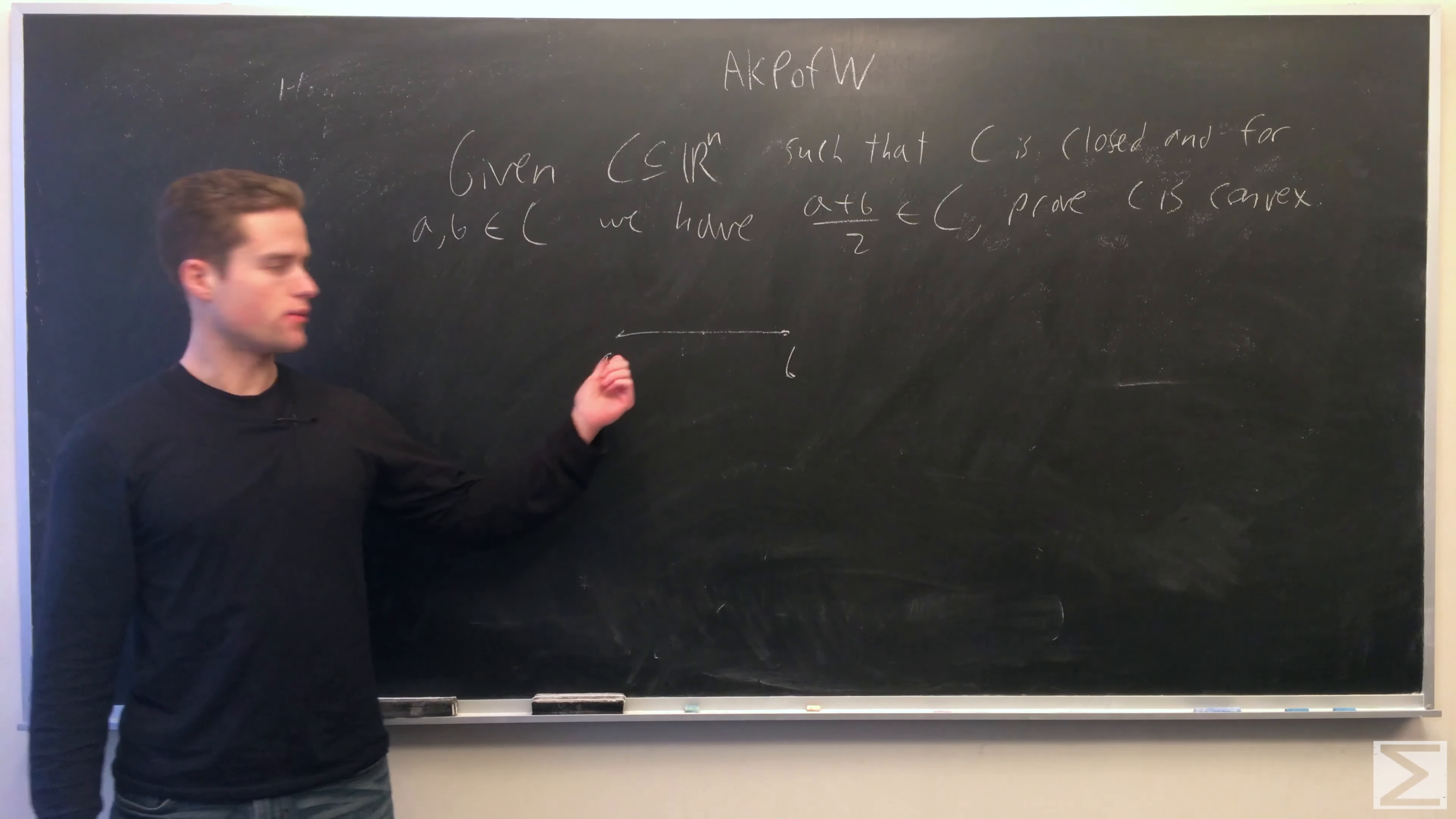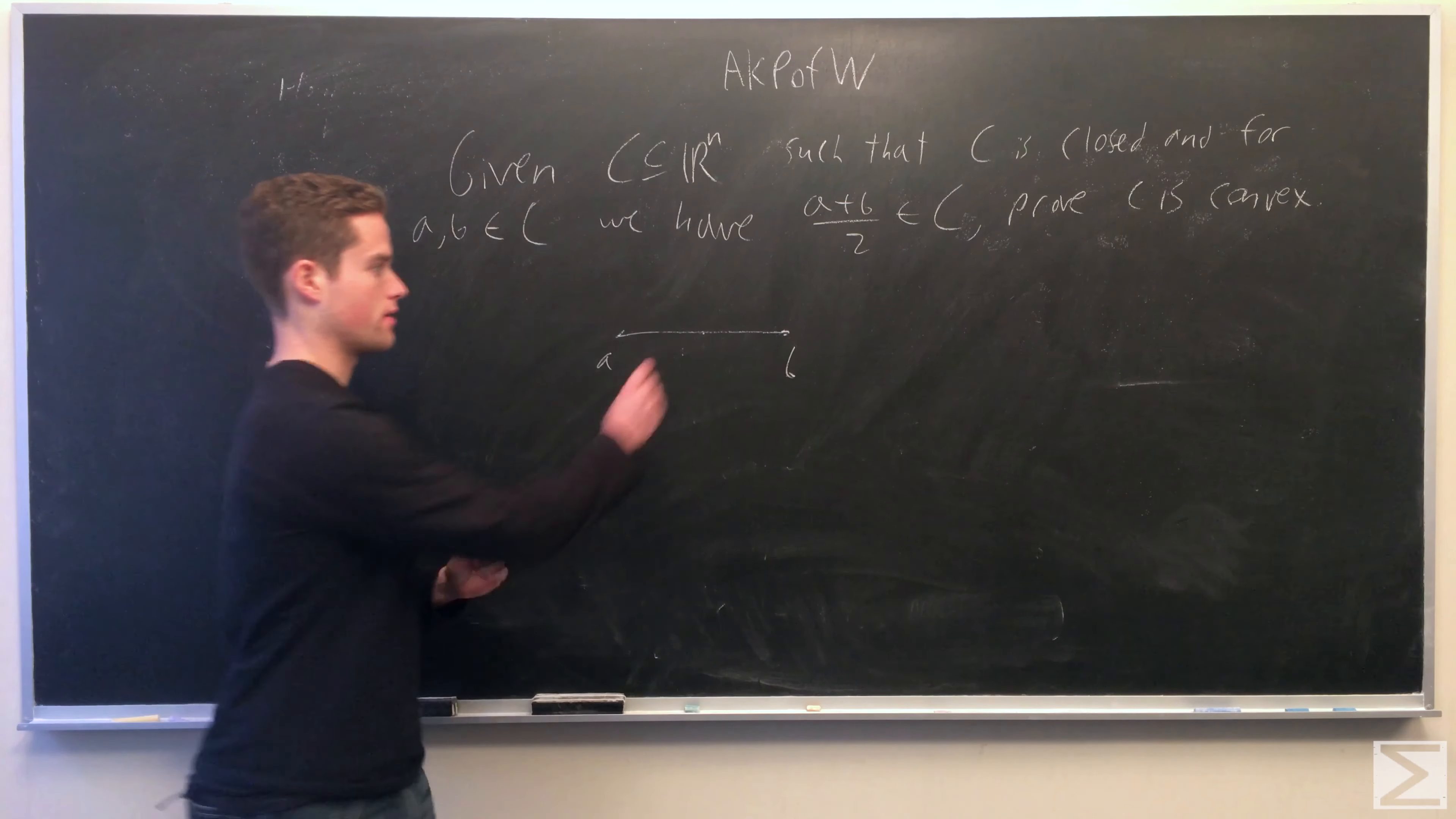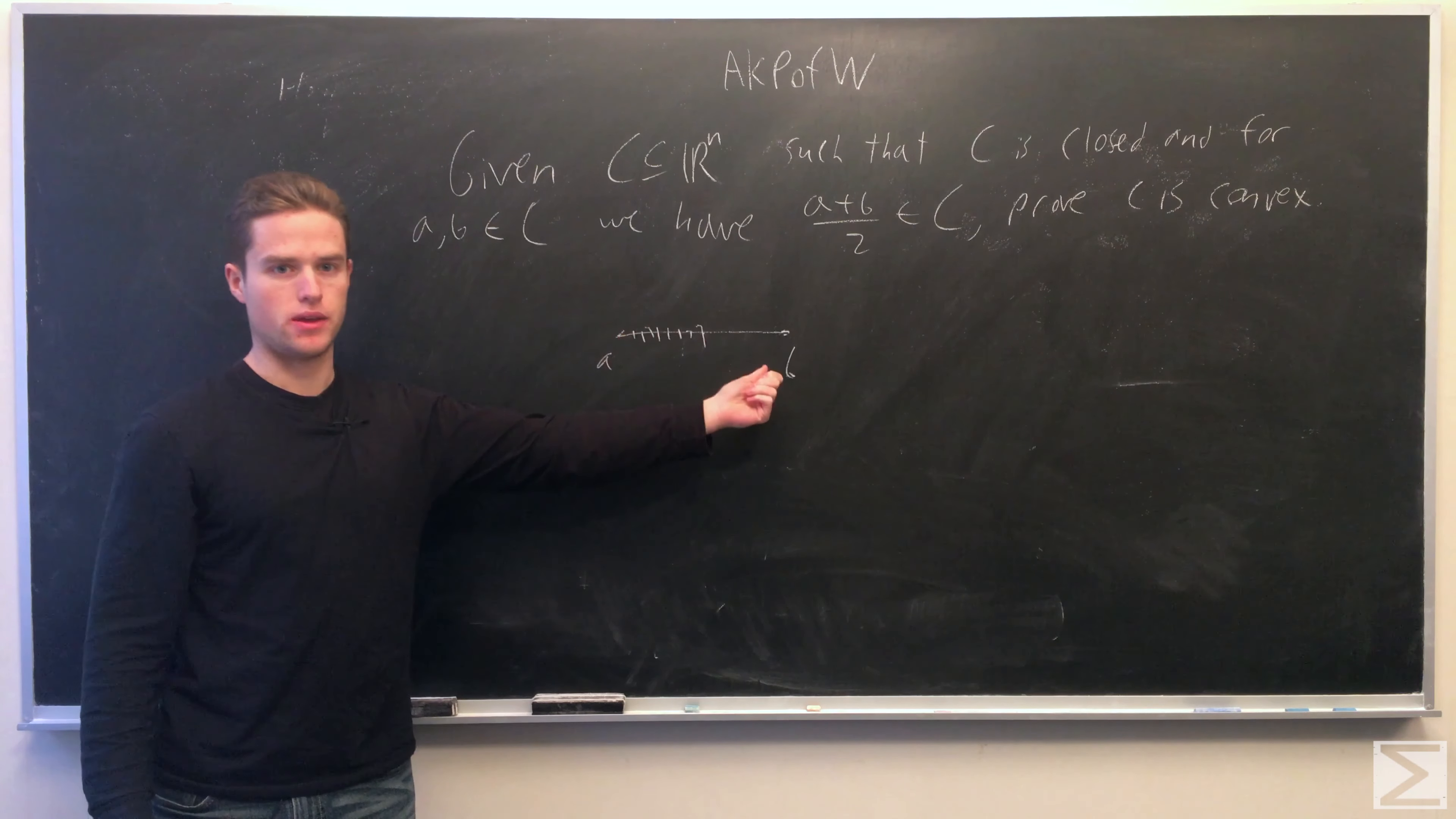So really the idea here, we have two points A, B, we have the midpoint is also in C, the midpoint of A and the midpoint is also in C. So we can keep taking midpoints of points, and by doing this, we're going to see that our set of midpoints on this line going from A to B.